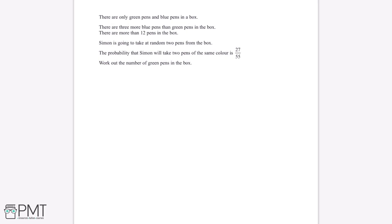There are only green pens and blue pens in a box. There are three more blue pens than green pens in the box, and there are more than 12 pens in the box. Simon is going to take at random two pens from the box. The probability that Simon will take two pens of the same colour is 27 over 55. Work out the number of green pens in the box.